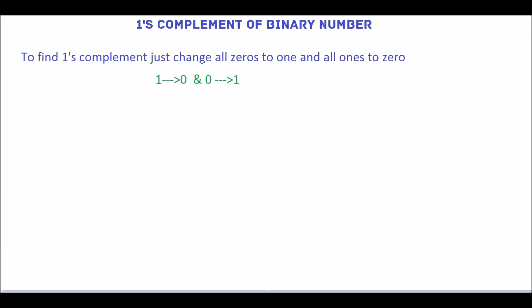In this tutorial, we will see how to represent the binary number in ones complement form. To find the ones complement, we have to change all zeros to 1 and all ones to 0.